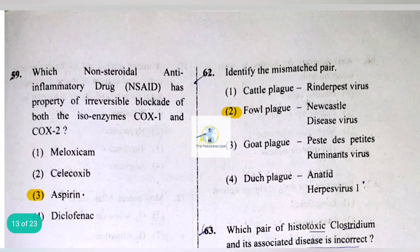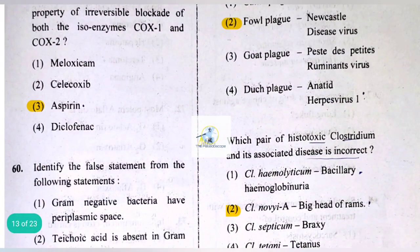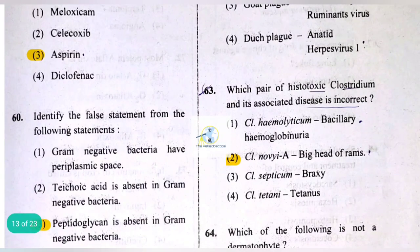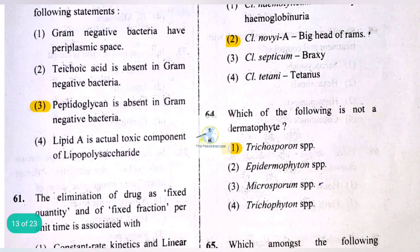Duck plague is associated with anatid herpesvirus 1. Regarding histotoxic Clostridium and associated disease, Clostridium novyi causing big head of rams is the incorrect pair. Trichosporon is not a dermatophyte — Trichophyton is — so the correct answer is Trichosporon.